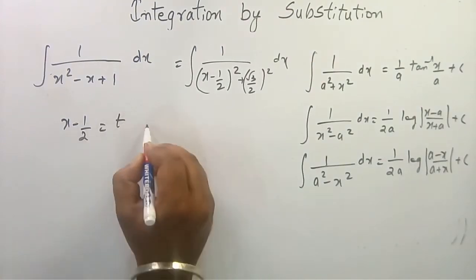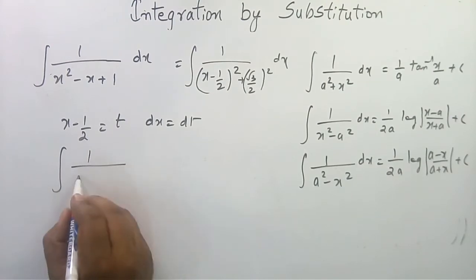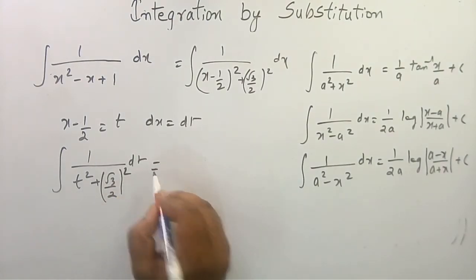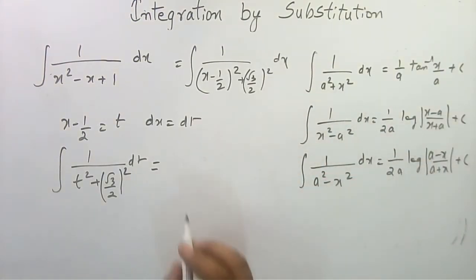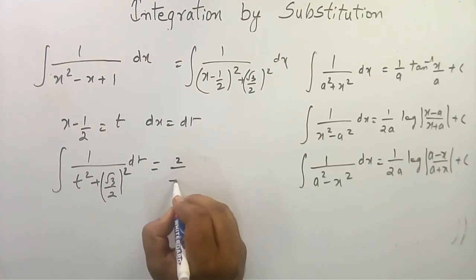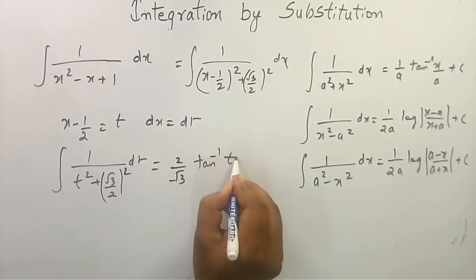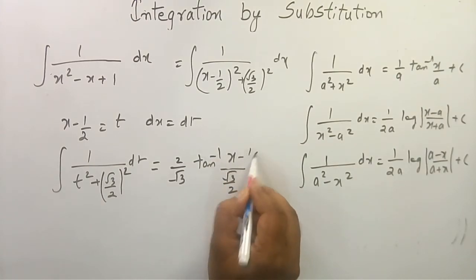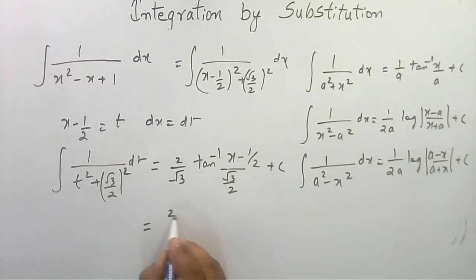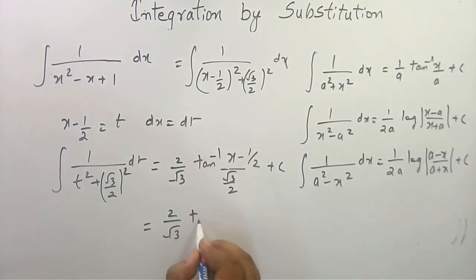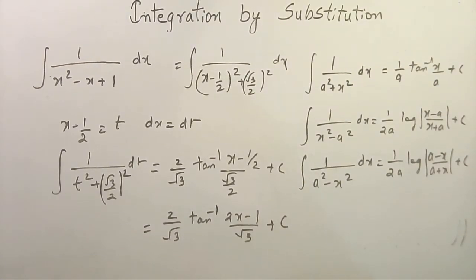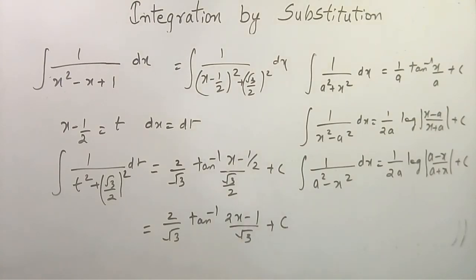Now, if we substitute x - 1/2 = t, then dx = dt. The expression reduces to ∫1/(t² + (√3/2)²) dt. Applying the first formula with a = √3/2, this gives (2/√3)·tan⁻¹(t/(√3/2)). Substituting back t = x - 1/2, the final answer is (2/√3)·tan⁻¹((2x - 1)/√3) + c.